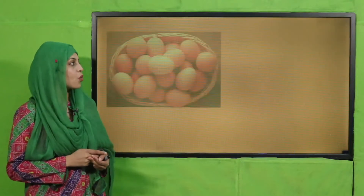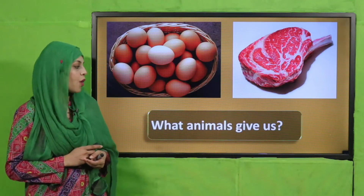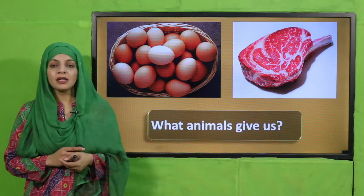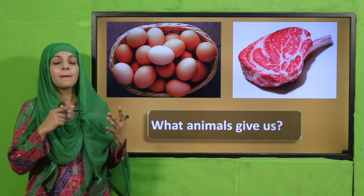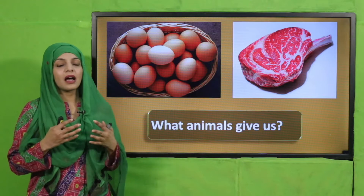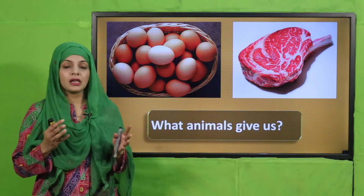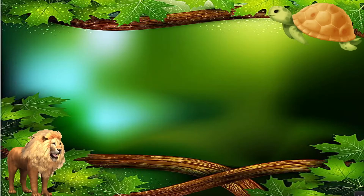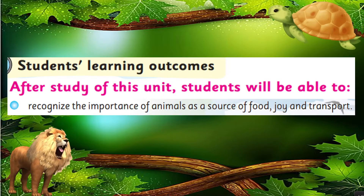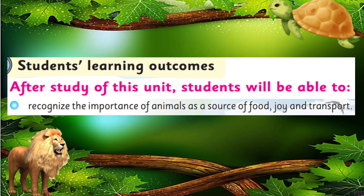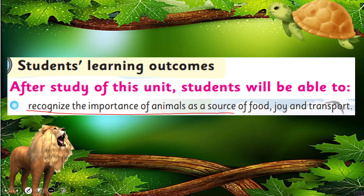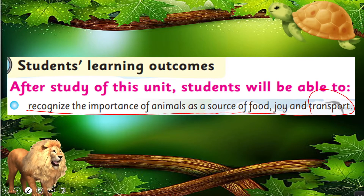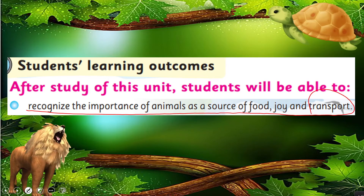Now let's move forward towards an activity. Quickly tell me: what do animals give us? We get milk, eggs, and meat — all these different things we get from animals. In today's lecture, students will be able to recognize the importance of animals as a source of food, joy, and transport.